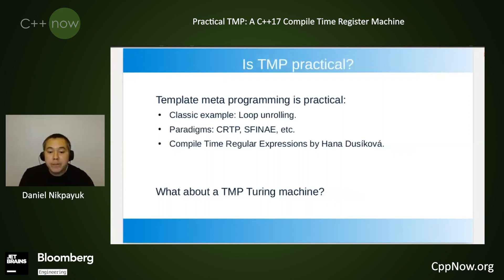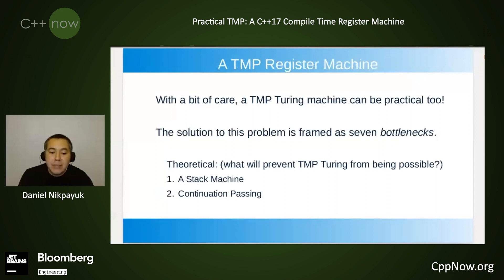So is TMP practical? The classic — one classic example is loop unrolling, but then there are well-known paradigms like the curiously recurring template pattern, as well as substitution failure is not an error. And then there's more recently compile time regular expressions. So yes, TMP is practical, but what about a TMP Turing machine? With a bit of care, a TMP Turing machine can be practical too.